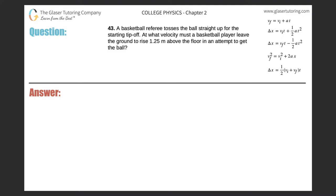Number 43. A basketball referee tosses the ball straight up for the starting tip off. At what velocity must a basketball player leave the ground to rise 1.25 meters above the floor in an attempt to get the ball?